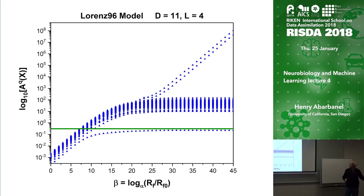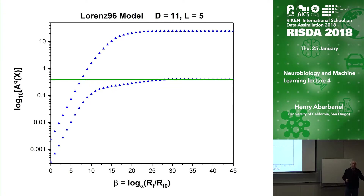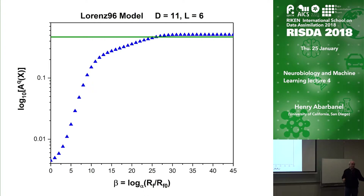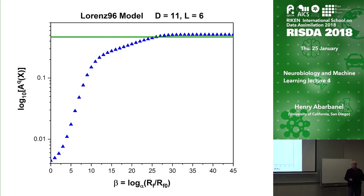Want more measurements? No problem. Make five measurements and there are only two action levels; six measurements and there's only one. This gives you a quantitative criterion — given data and a model — for whether or not your path, determined by whatever method you want, will give you an accurate estimate of moments of the probability distribution you're after, including the expected value of state variables like temperature or pressure.